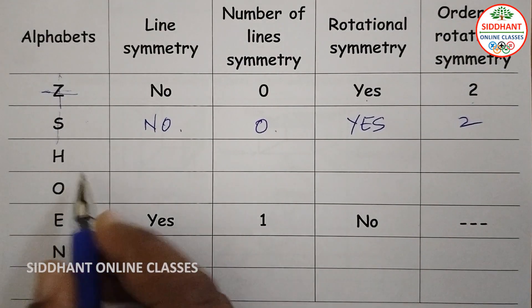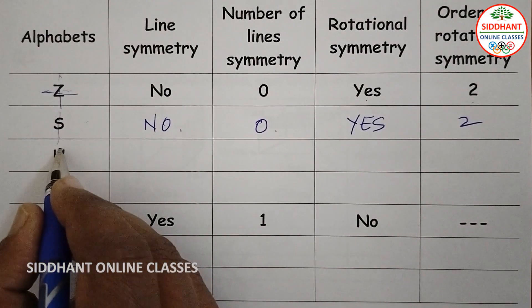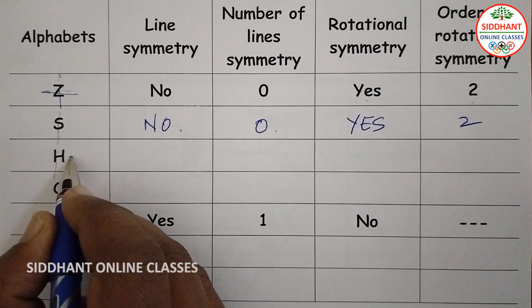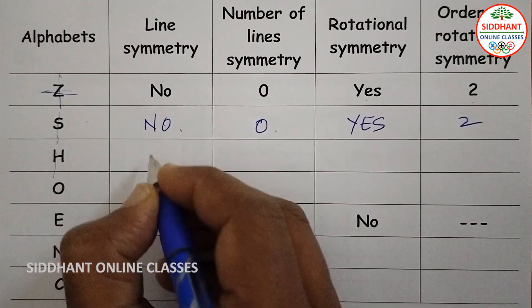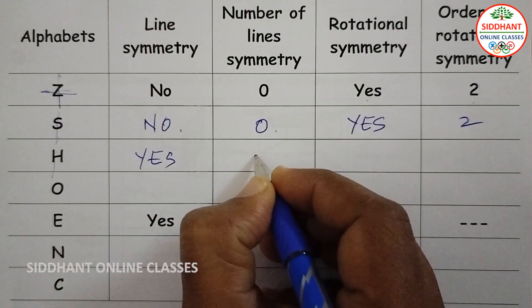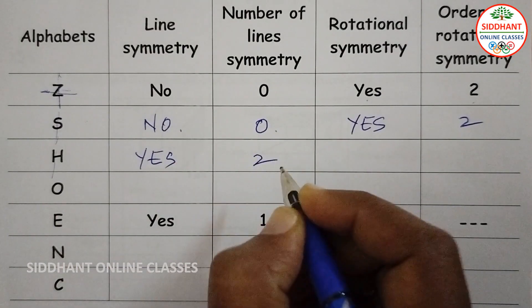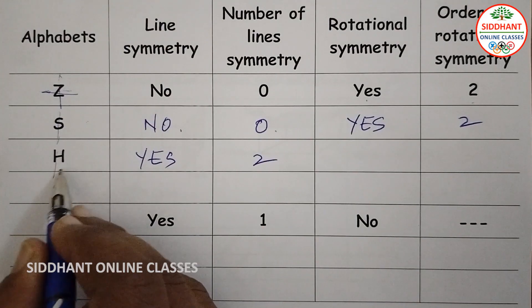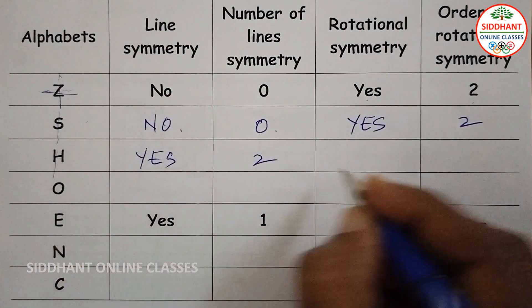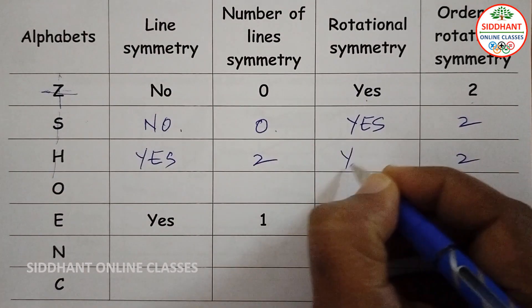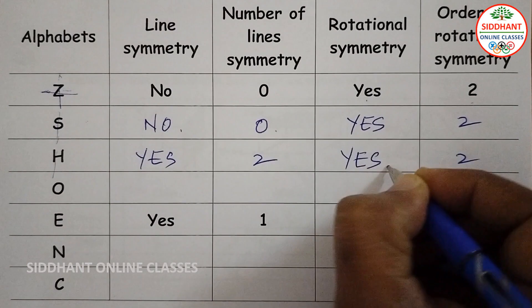Alphabet H. There is a line of symmetry here — vertically 1, and horizontally 1. So line of symmetry is Yes, and the number of lines is 2. For rotational symmetry, once you rotate 90 degrees and another 90 degrees, you get 2 rotations. So rotational symmetry is also Yes.